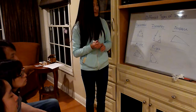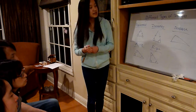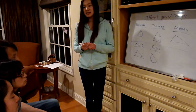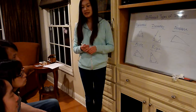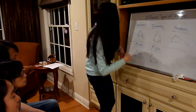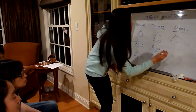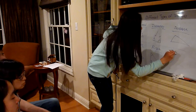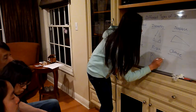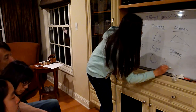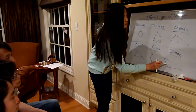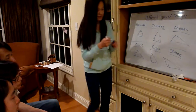And the last kind — can anyone tell me what you call an angle that's greater than 90 degrees? Obtuse — that's right. So an obtuse triangle has one angle that is greater than 90 degrees, like this one here.